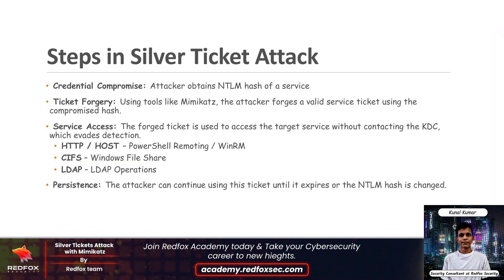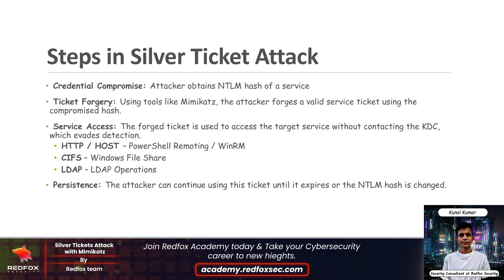Next, steps in a Silver Ticket attack. To forge or create the ticket, the attacker must know the NTLM hash of a service account — basically the machine account. We can forge or create the ticket using tools like Mimikatz. The attacker can create a valid service ticket using the compromised hash of the machine account. There are many services we can access using a Silver Ticket: HTTP or HOST used for PowerShell remoting or WinRM, CIFS used for Windows file shares, and LDAP used for LDAP operations. After crafting the Silver Ticket, the attacker can continue using this ticket until it expires or the NTLM hash changes. In Active Directory, every 30 days machine account credentials are rotated.